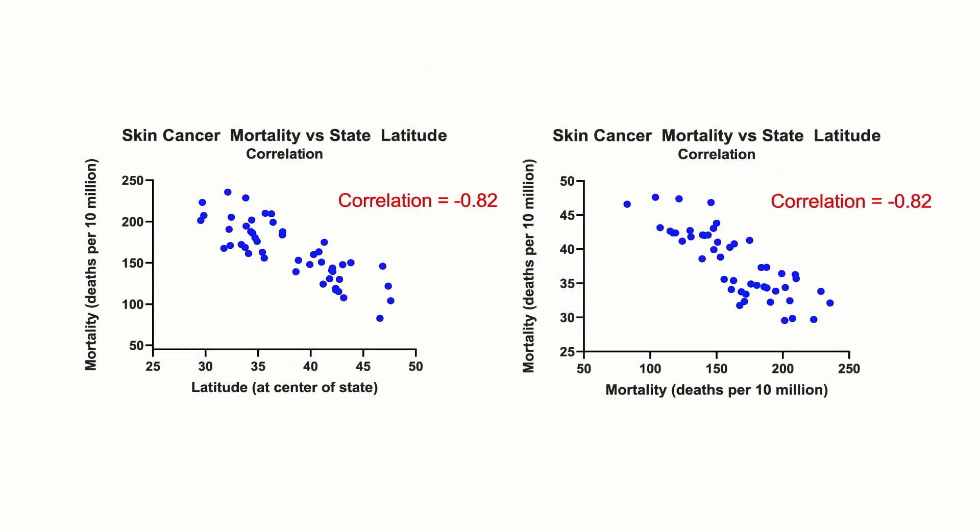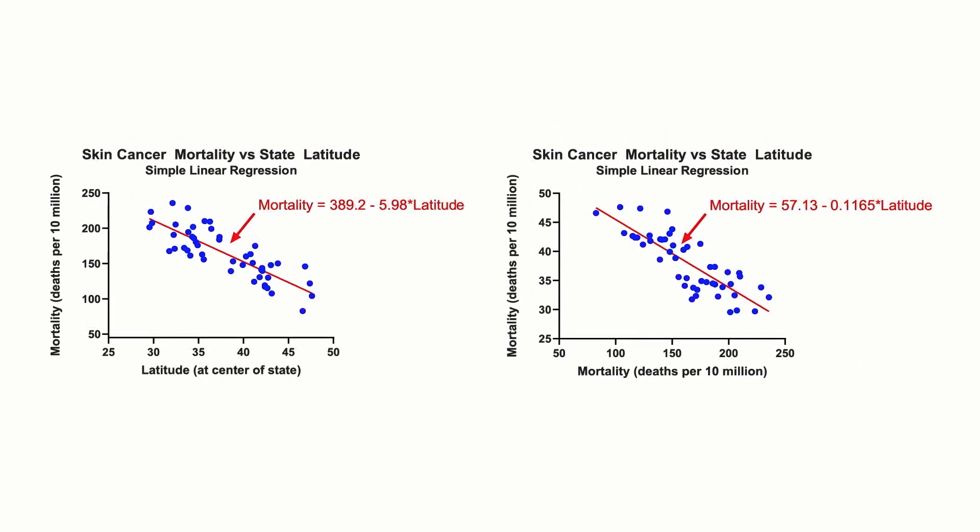Another difference: with correlation, the x and y variables are interchangeable, whereas with regression, the results of the analysis will change if x and y are swapped.